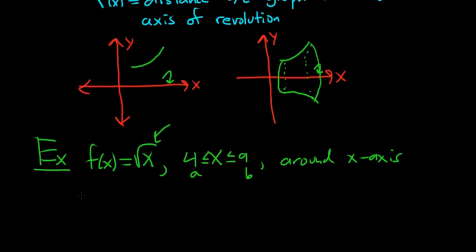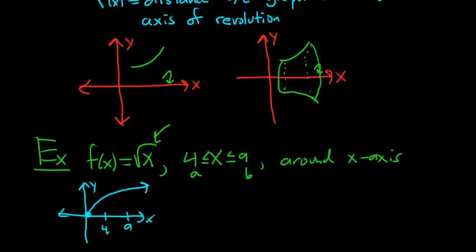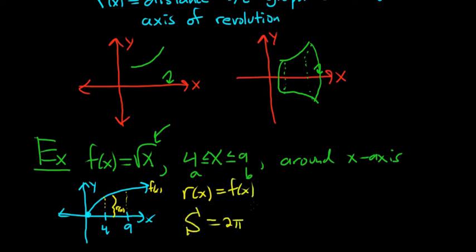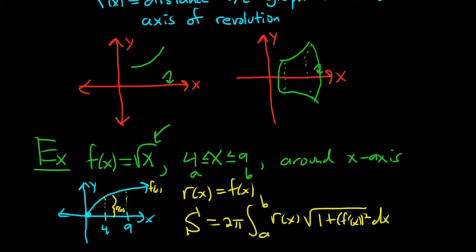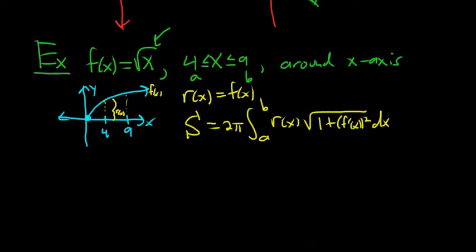So what is going on in this picture? Basically here's the y-axis, here's the x-axis. That's our function, and here's 4 and here's 9. We're just concerned with this piece here. We need to find little r, because in the formula we need little r. Little r is the distance between the function and the axis. So in this case, little r of x is the same as f of x — it's just the function itself. You always have to find little r first, that's why I drew the picture.